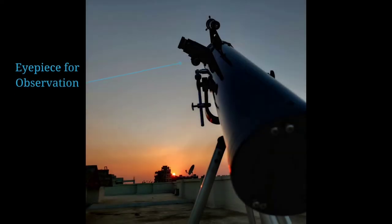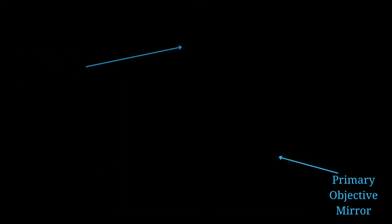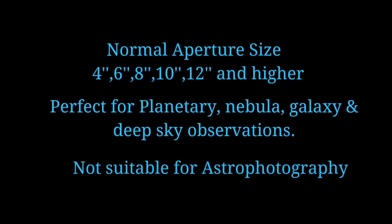Newtonian Reflectors. This type of telescope was designed by Isaac Newton. It is simple in design and low budget compared to refractors. In this type of telescope, the primary objective mirror is at the end of the telescope tube, and you can observe the object at the top of the telescope with the eyepiece.